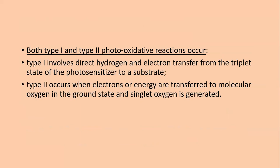Both type 1 and type 2 photo-oxidative reactions occur. Type 1 photo-oxidative reactions involve direct hydrogen and electron transfer from the triplet state of the photosensitizer to the substrate. Type 2 occurs when electrons or energy are transferred to molecular oxygen in the ground state, and singlet oxygen is generated. In type 1, direct radical transfer occurs; in type 2, singlet oxygen is produced.